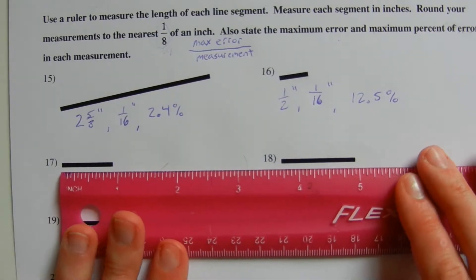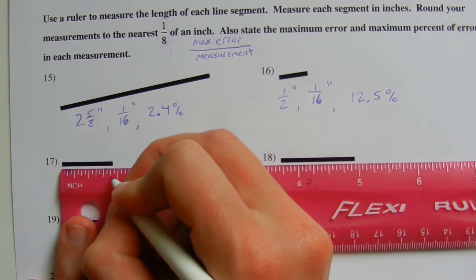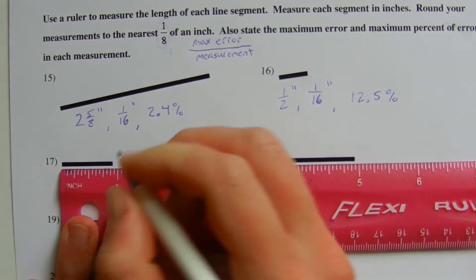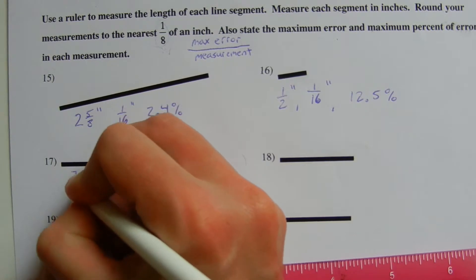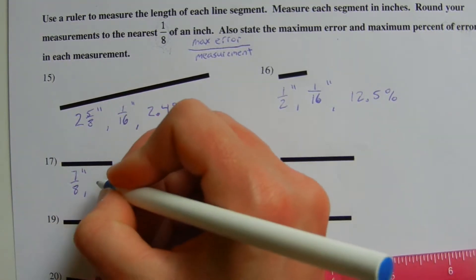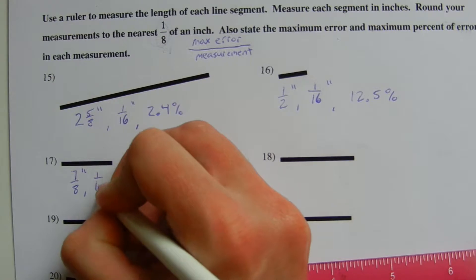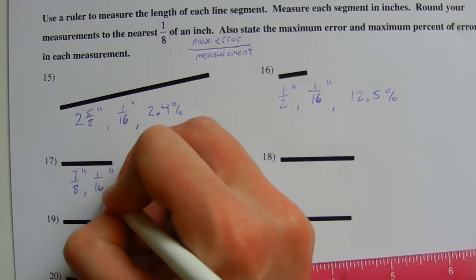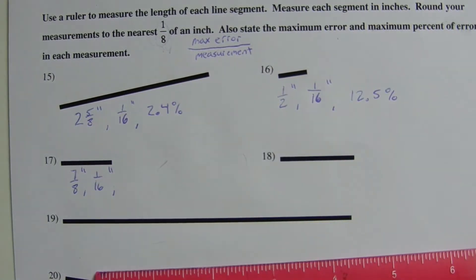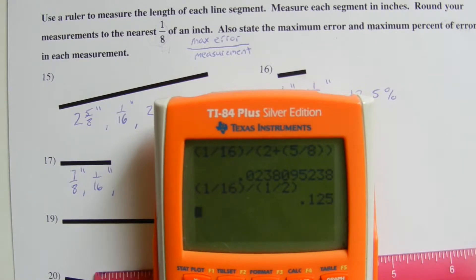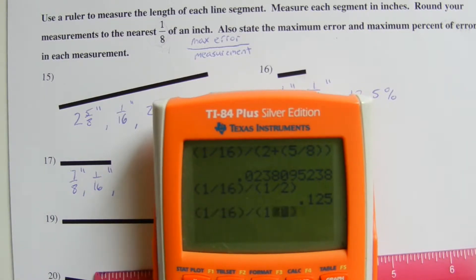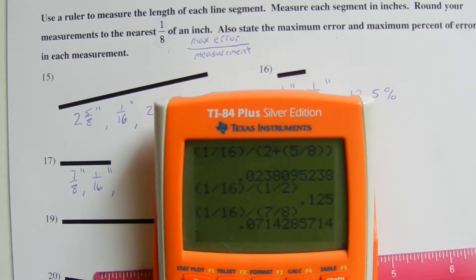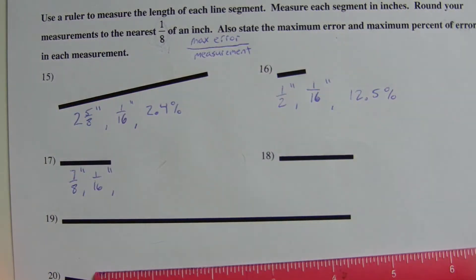For number 17, I'm a little short of an inch, so I'm going to say this measurement is seven eighths of an inch. Our max error since we're rounding to the nearest eighth is one sixteenth of an inch. Taking one sixteenth divided by seven eighths equals 0.0714, which is approximately 7.1 percent.